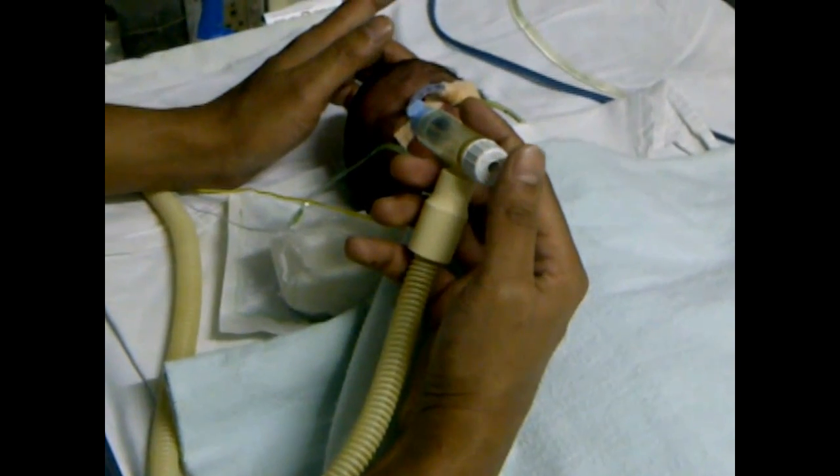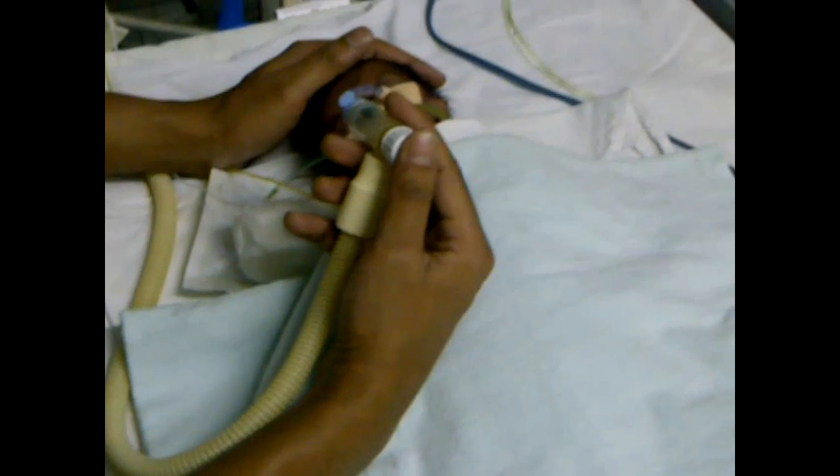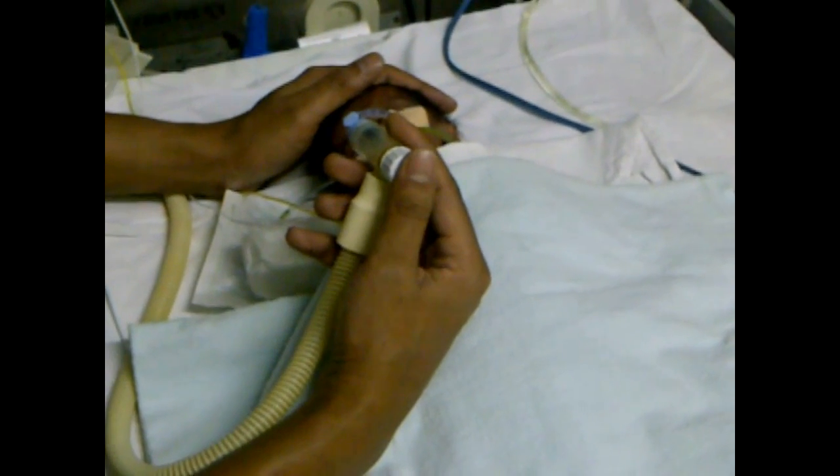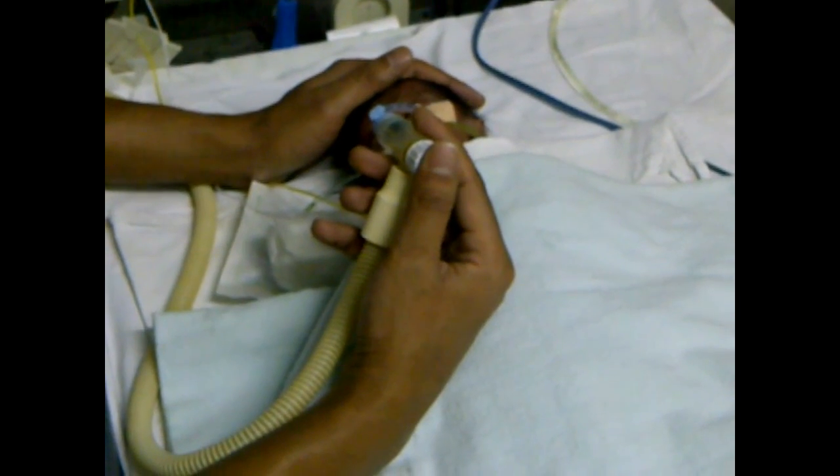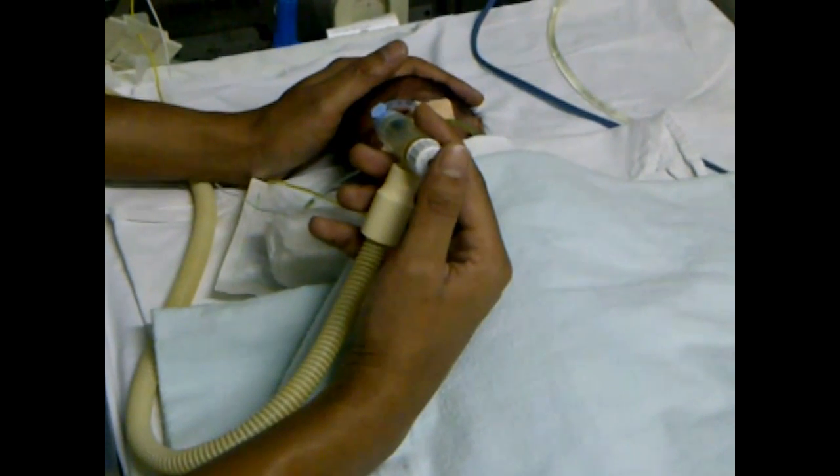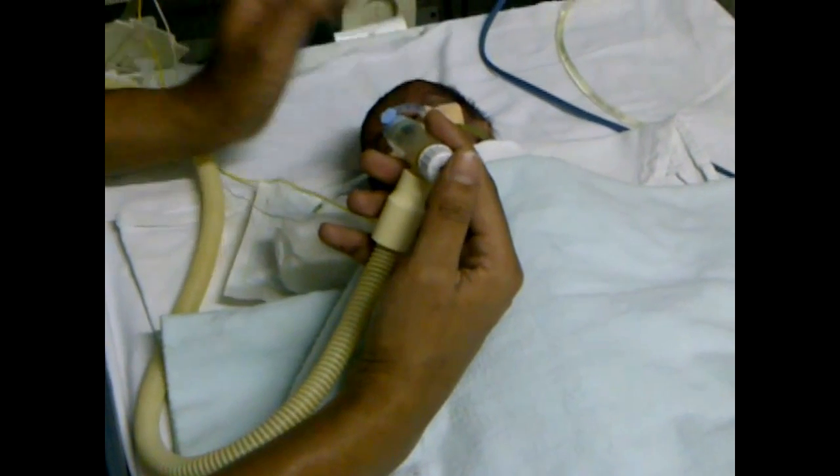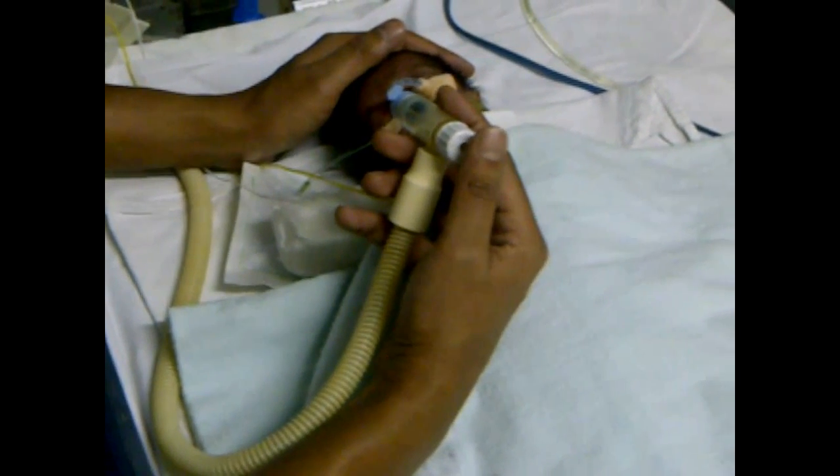By moving the white knob in a clockwise or anticlockwise direction, we can set the positive end expiratory pressure for this patient. All you have to do to deliver a breath is to block the PEEP valve opening with your thumb. You release it and the patient exhales automatically.